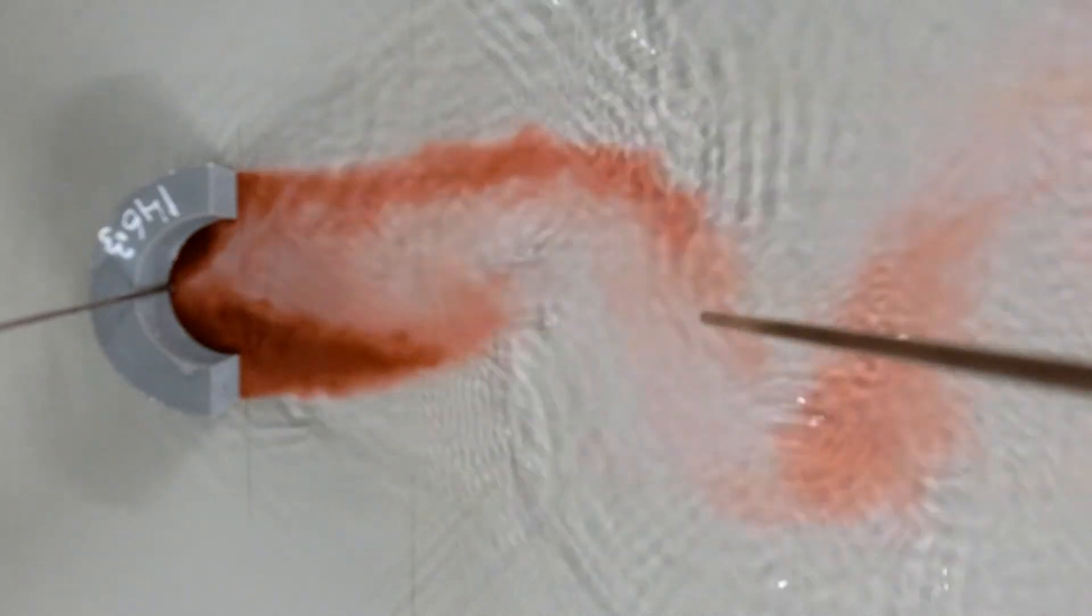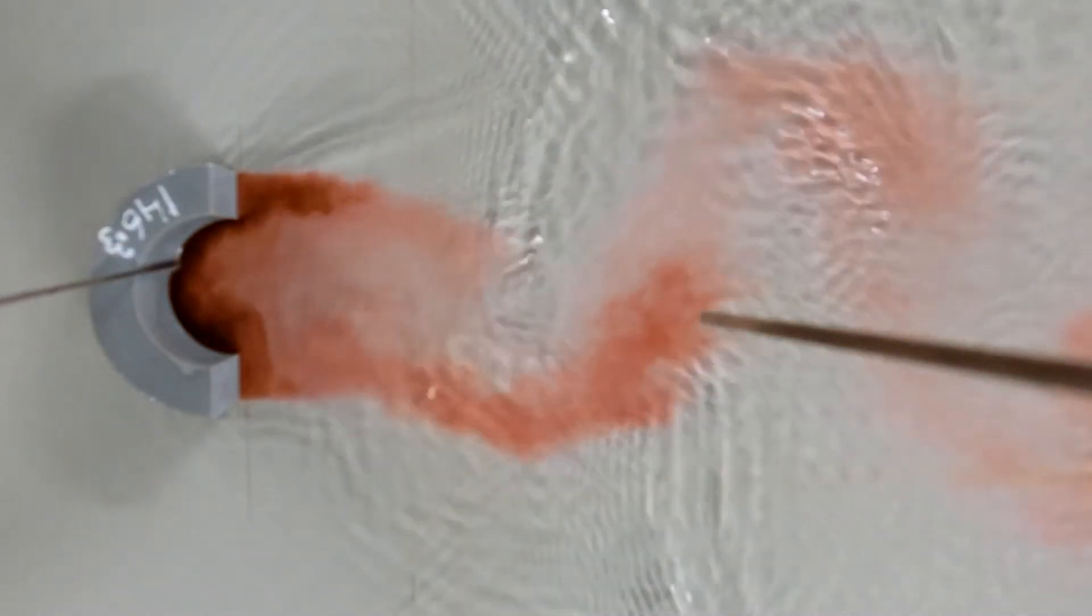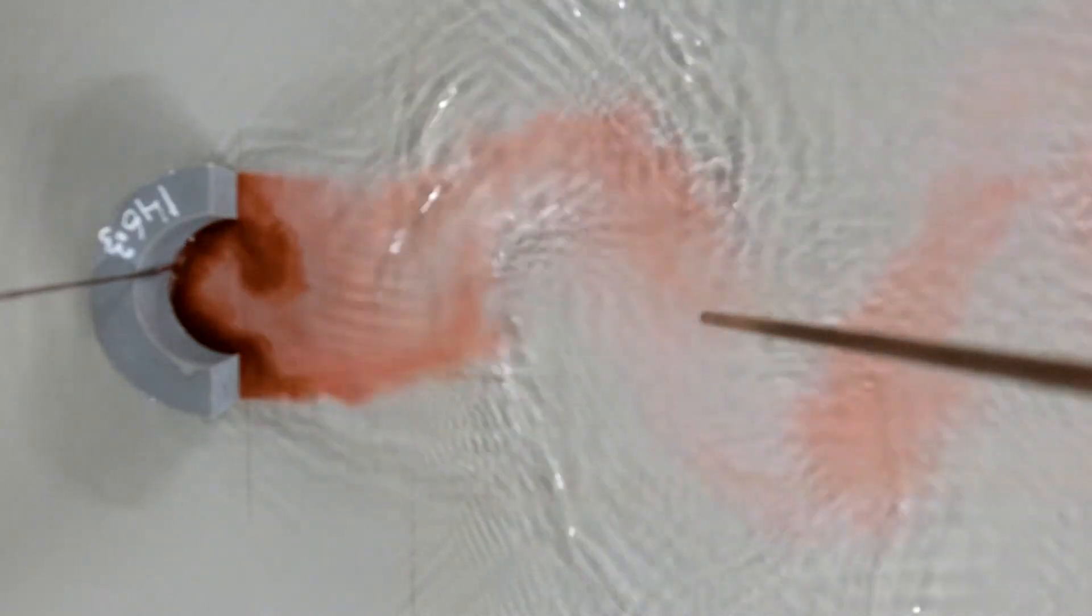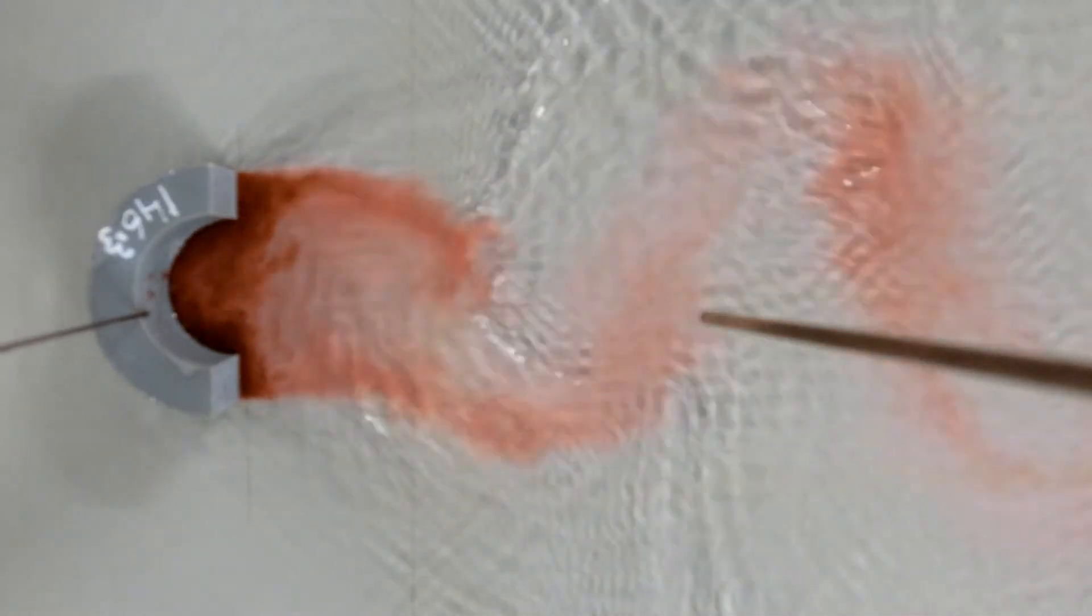This movie illustrates a well-organized street of vortices with a Reynolds number of about 18,000.